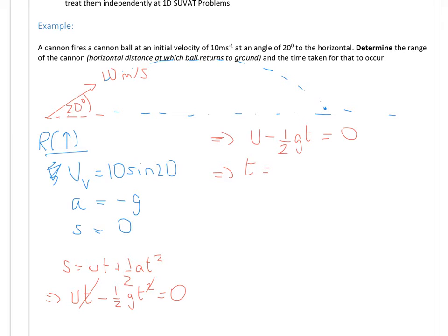So we can cancel out t's at this point. We divide both sides by t, and then we end up with an expression. So we know that u minus a half g t is equal to 0. And we want to find the time. So we'll take the half g t to the other side, times by 2 to get rid of the half, divide by g, and that should give you t.